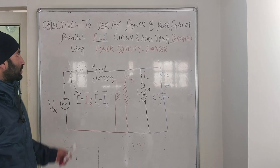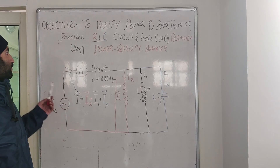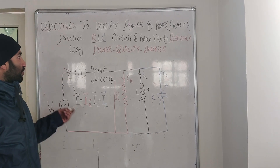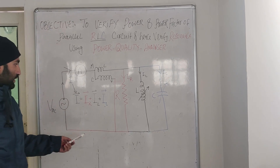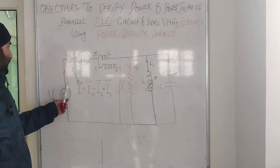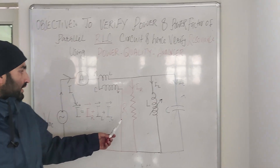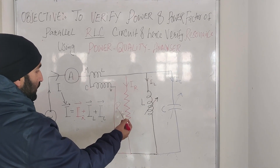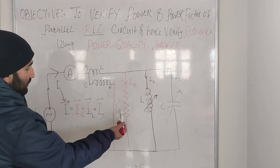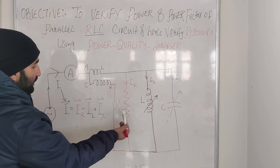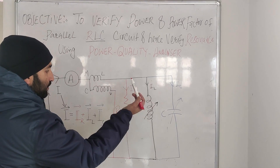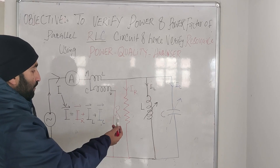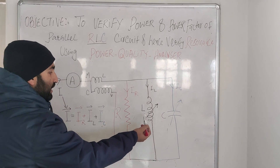Welcome. Today we are going to verify the power and power vector of a parallel RLC circuit and verify the results using the power quality analyzer. As you can see in the circuit diagram, we have an AC supply, an ammeter, a watt meter, and three loads — R, L, and C — connected in parallel, designated by different colors. The resistive load is red, the inductive load is black, and the capacitive load is green.